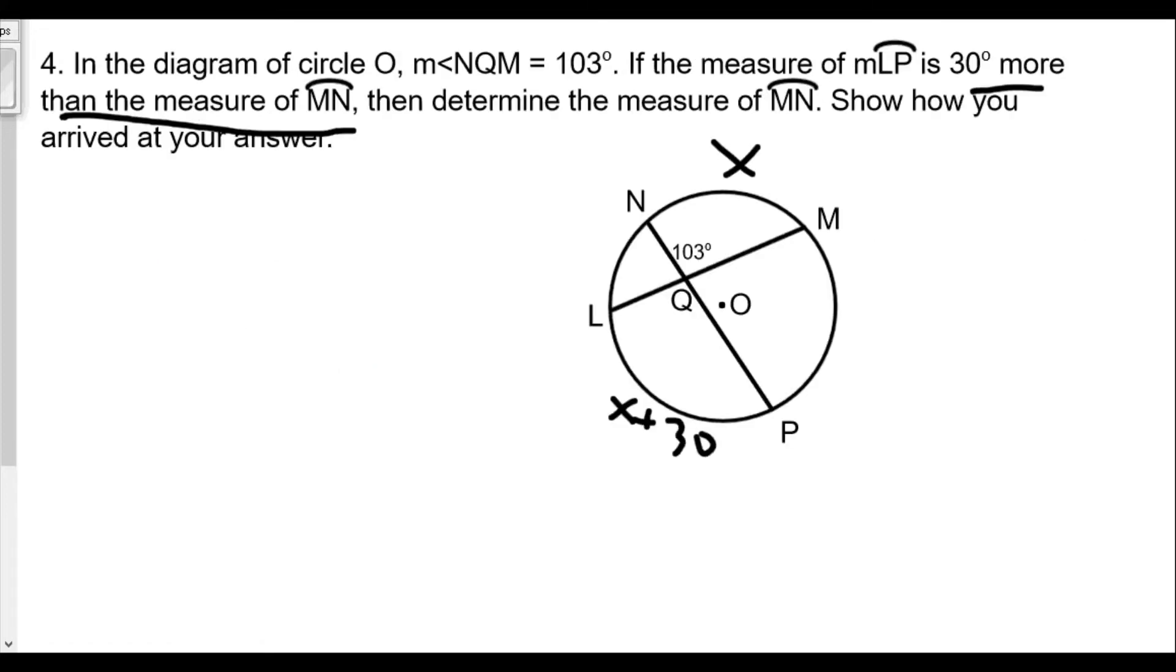We know that angle NQM is congruent to LQP, and those are the angles that intercept these two arcs. So the measure of angle NQM equals one half the sum of the measure of arc NM plus the measure of arc LP. We know NQM is 103 degrees.